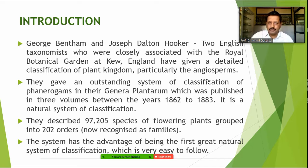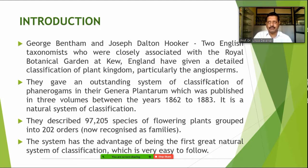They gave an outstanding system of classification of phanerogams — meaning flowering plants — in their book Genera Plantarum, published around 1883. It is a natural system of classification where they used mostly observable characters. They described around 97,205 species of flowering plants grouped into 202 orders, which we now recognize as families.